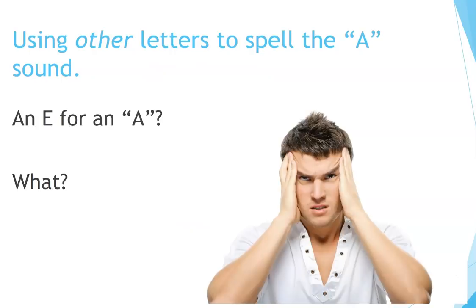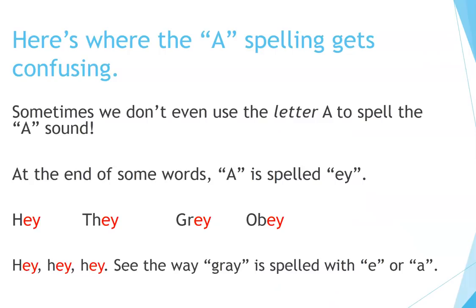Using other letters to spell the A sound — an E for an A? Here's where the A spelling gets confusing. Sometimes we don't even use the letter A to spell the A sound. At the end of some words, A is spelled E-Y. Hey. They. Gray. Obey. Hey, hey, hey — see the way gray is spelled with E or A.